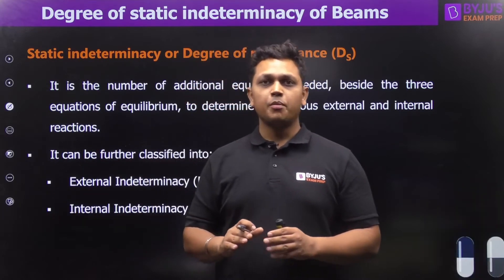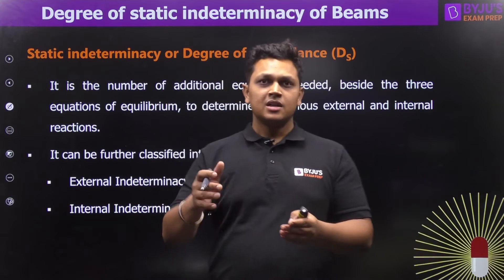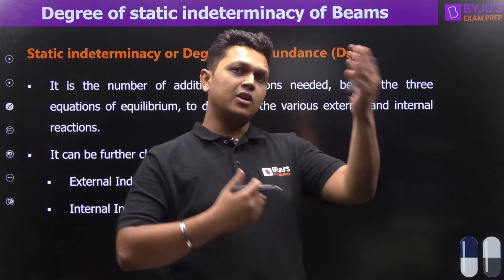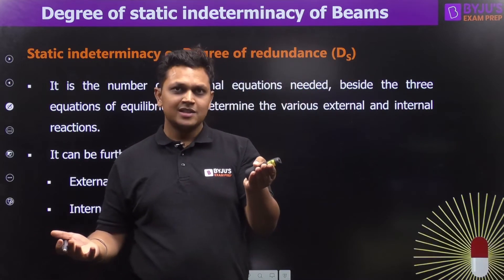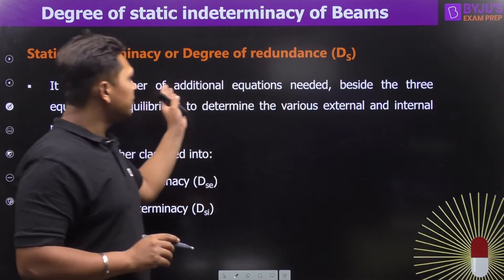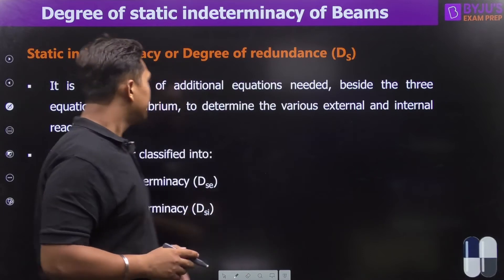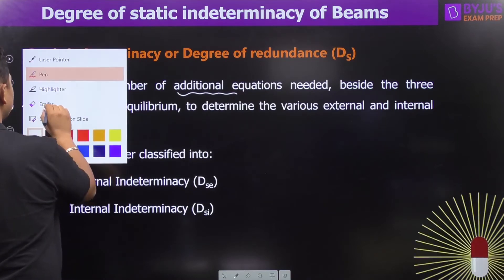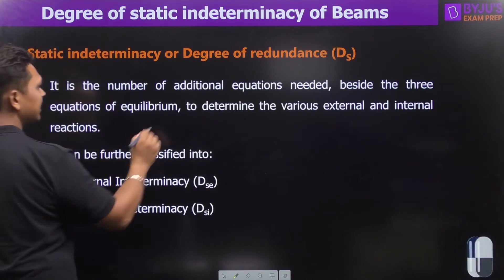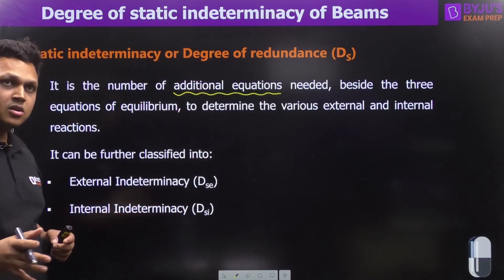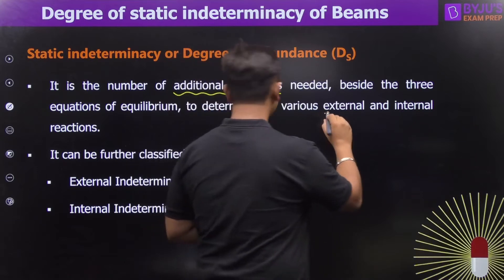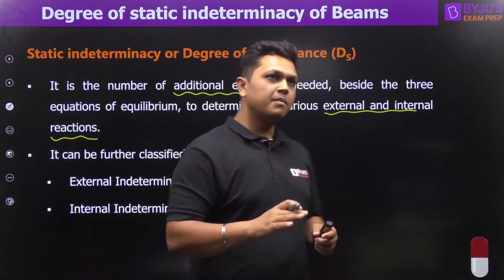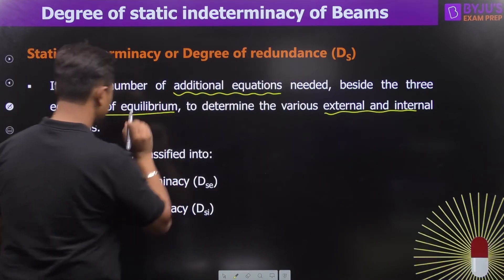Static indeterminacy or degree of redundancy refers to the extra reactions you have beyond the equilibrium equations. Suppose you have three reactions and three equilibrium equations — you can solve three unknowns. But if there are four unknowns and only three equations, there is one redundant reaction. So static indeterminacy is the number of additional equations needed to determine the external or internal reactions beyond the equations of equilibrium.